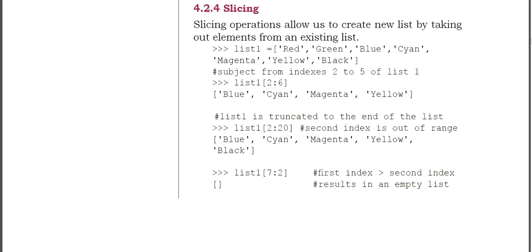So here we have list1 containing the elements: red, green, blue, cyan, magenta, yellow, and black. What we are doing is slicing some elements from a mentioned index. Here we are mentioning index 2 to 6, which means it takes out values from index 2 to 5. Index 0 is red, 1 is green, 2 is blue — so it will take blue, cyan, magenta, yellow, and we mention 6 here to fetch till yellow.